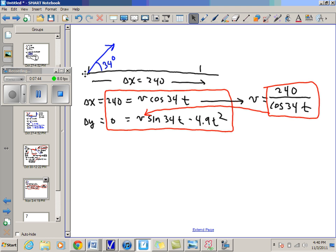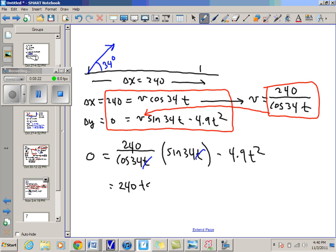So we've seen this a few times now, hopefully the pattern is starting to look familiar. So now I get, for this equation here, zero equals 240 divided by cosine 34 t, all times sine 34 t minus 4.9 t squared. And I can see as before, this is quite handy because now these t's are going to go away. And I get 240 sine 34 over cosine 34, which is the same thing as 240 tangent 34 minus 4.9 t squared.